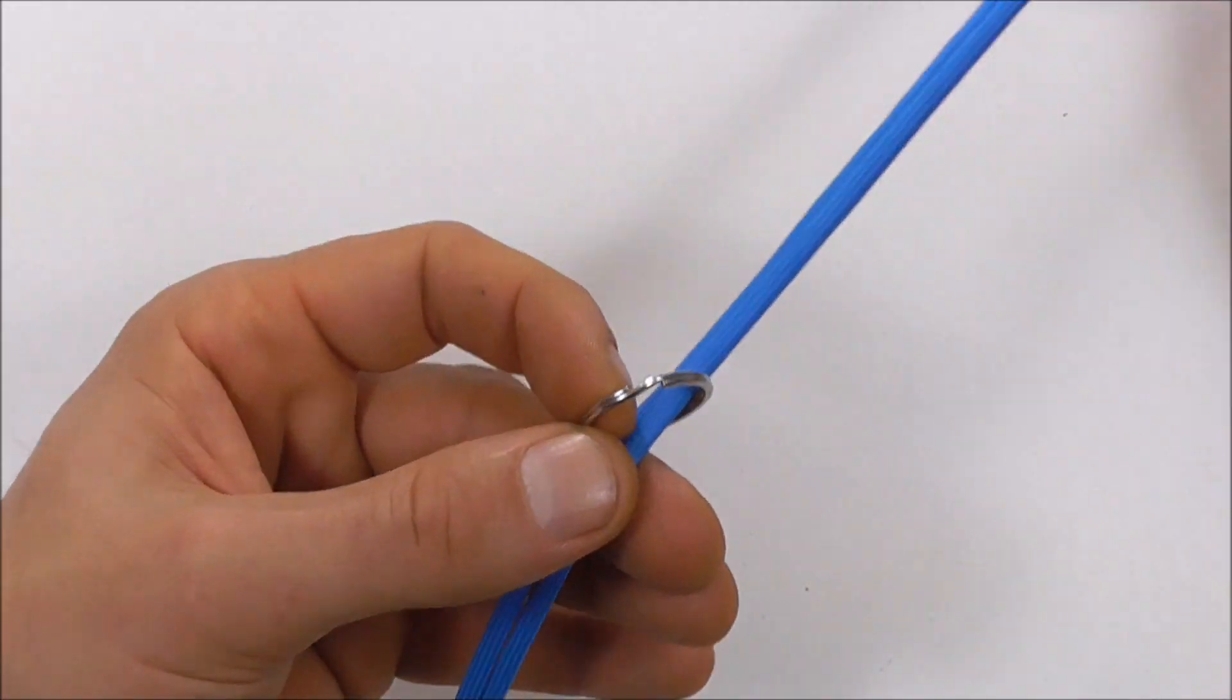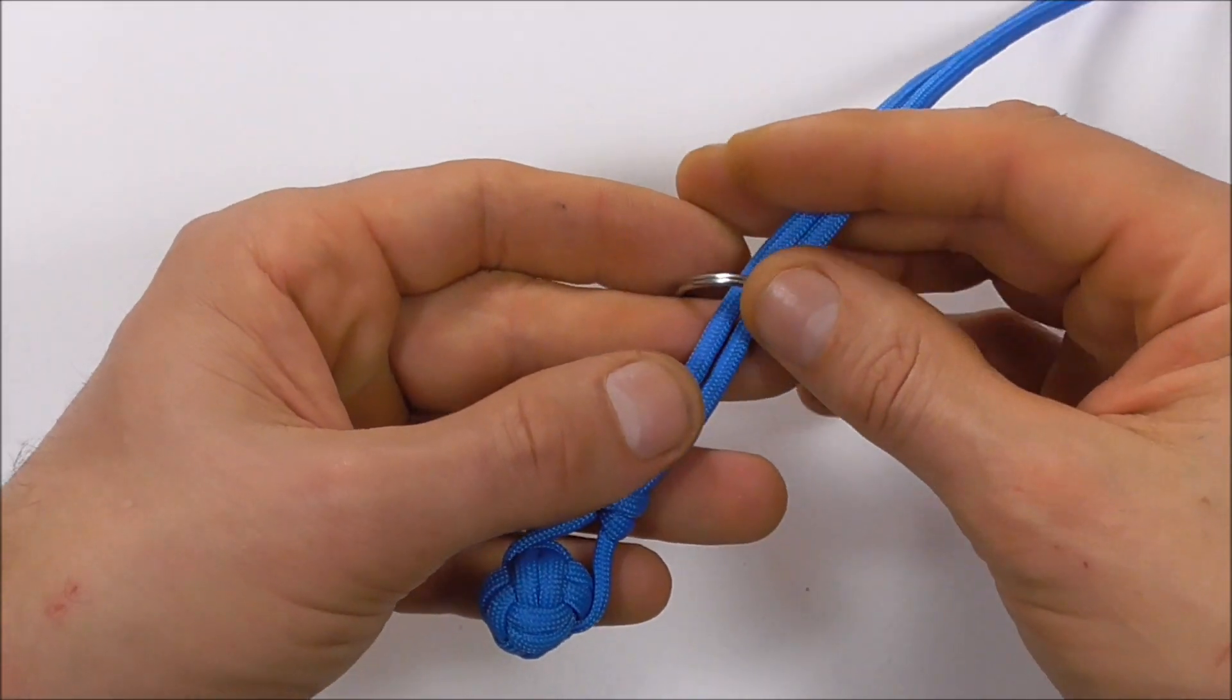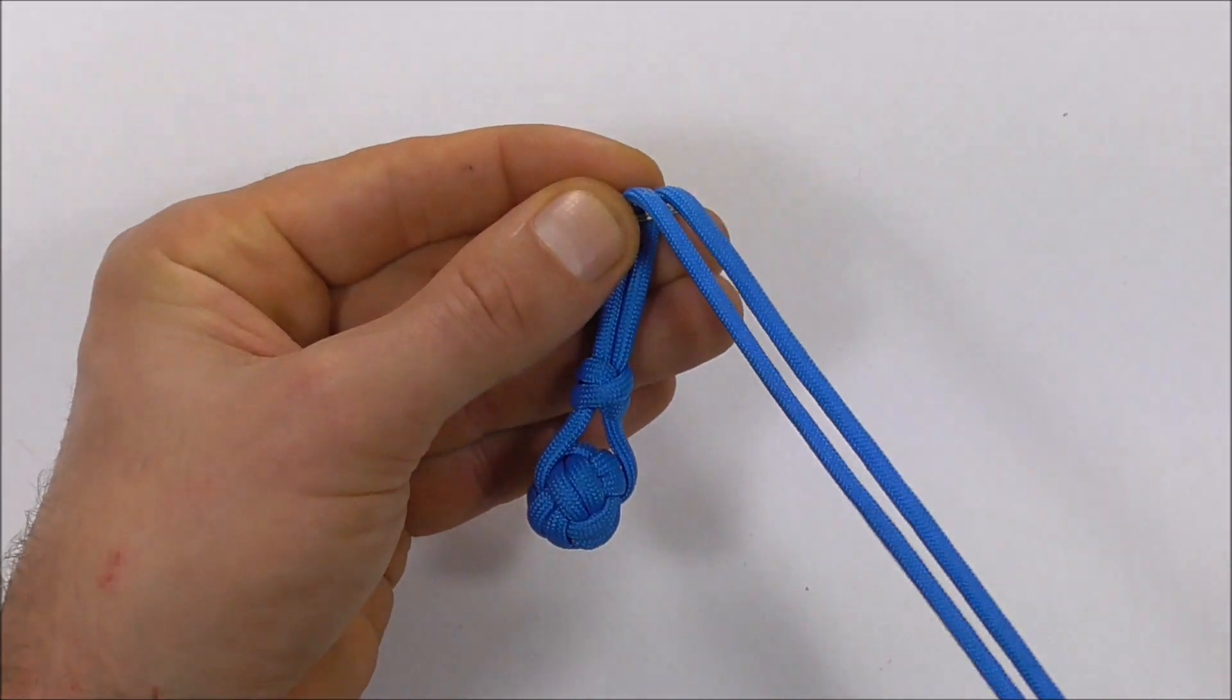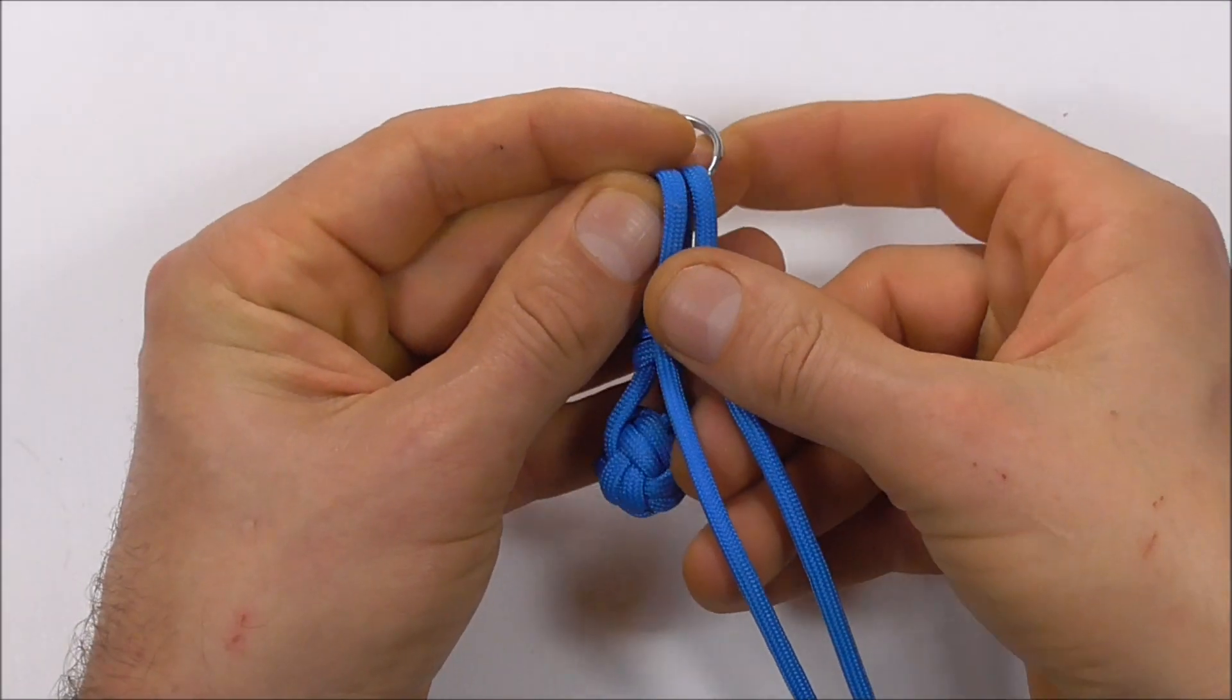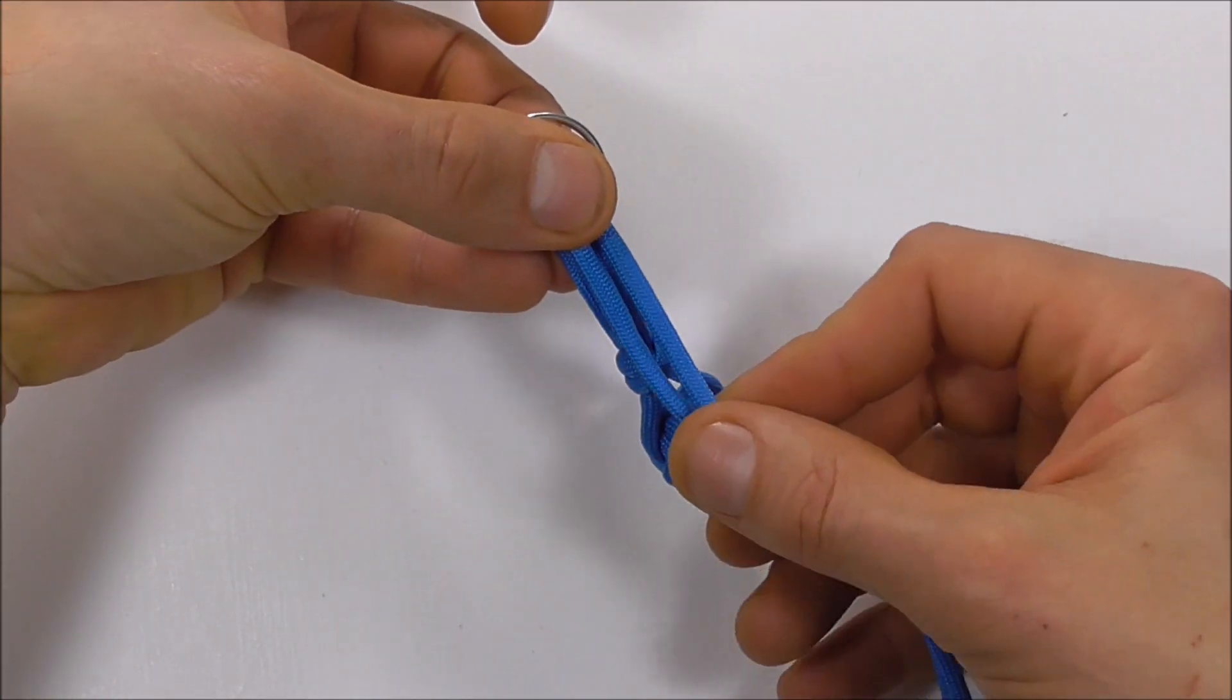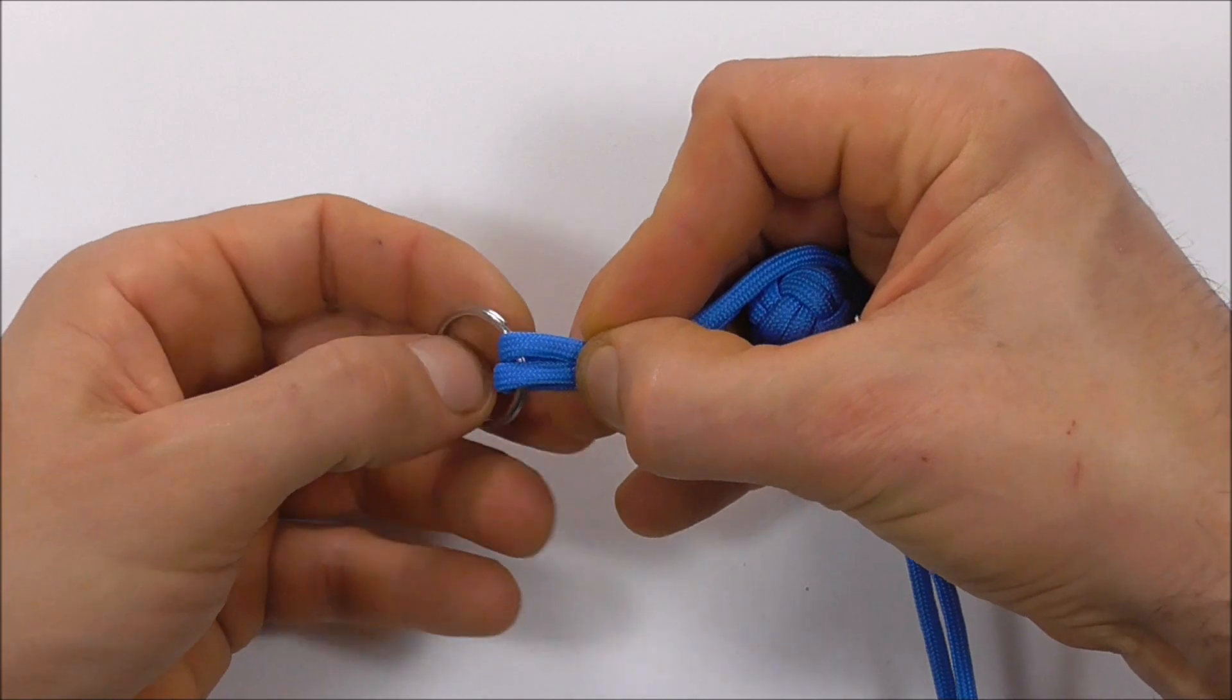Put your ring over those two strands and then pinch it off. You want to fold these two strands down, and I'm going to place this on its side.